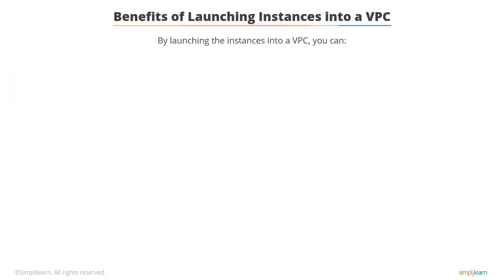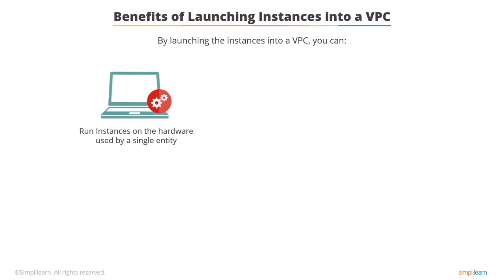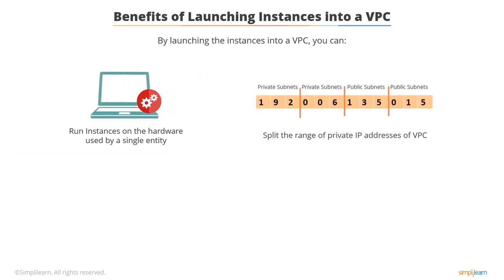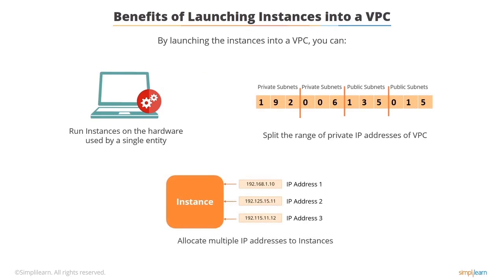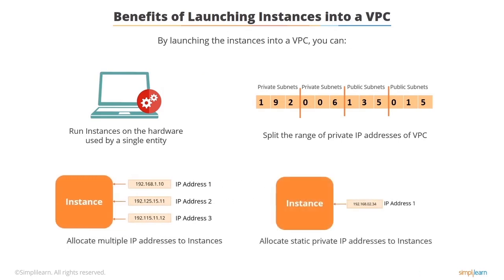By launching instances into a VPC, you can run instances on hardware used by a single entity, split the range of private IP addresses of the VPC into one or more private or public subnets to run services and applications, allocate multiple IP addresses to instances, and allocate static private IP addresses to instances that continue to run across starts and stops.